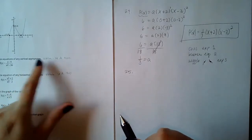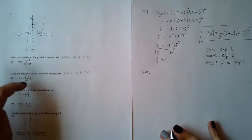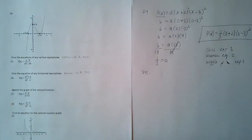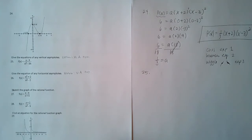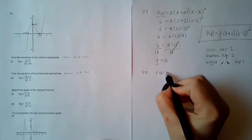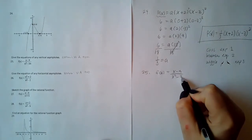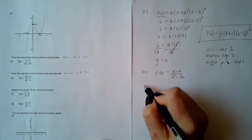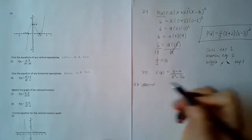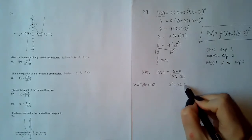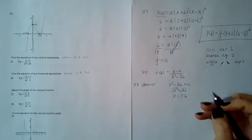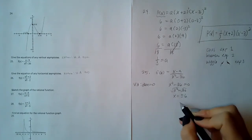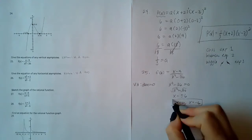Number 25 asks for both vertical and horizontal asymptotes because these are different cases, and I want you to have practice with both. For vertical asymptotes, set the denominator equal to zero: x² − 36 = 0, add 36, take the square root, and you get x = ±6. So there are two vertical asymptotes: x = 6 and x = −6.